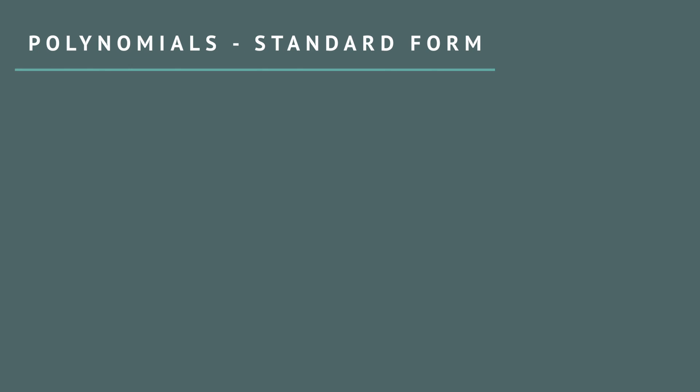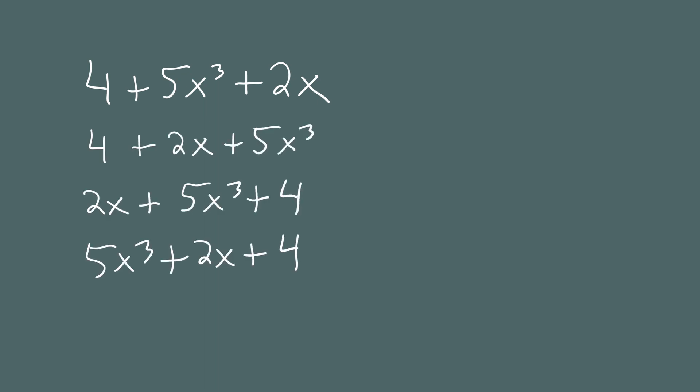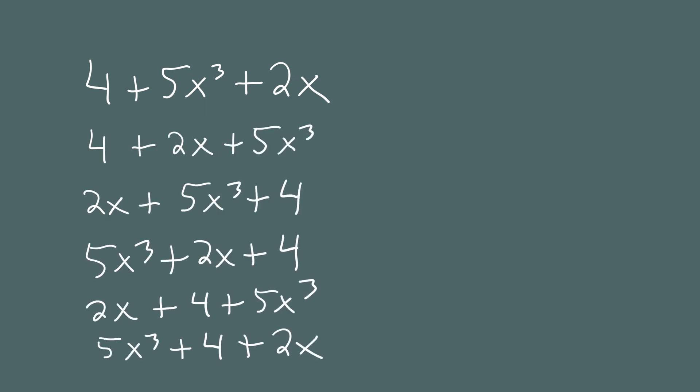Let's begin with an example by looking at the polynomial 4 plus 5x cubed plus 2x. This polynomial has three terms, and you could actually write it in six different ways by writing the three terms in different orders.